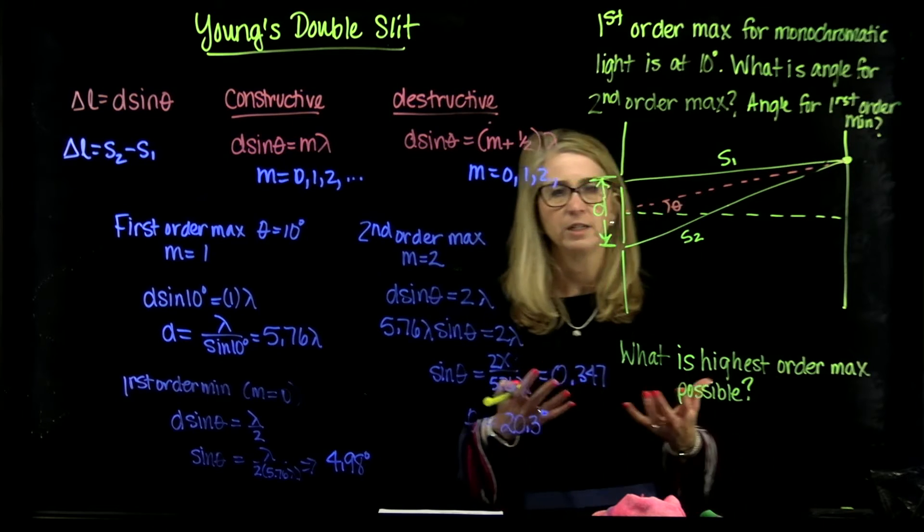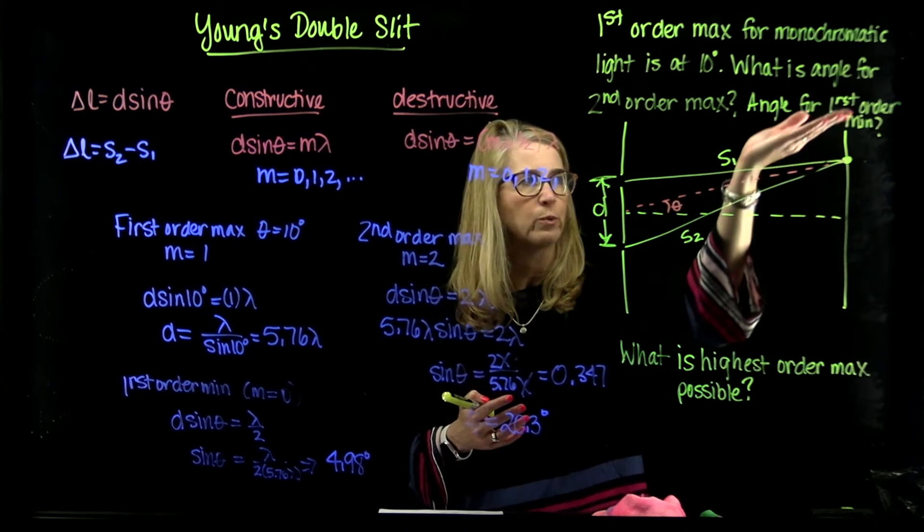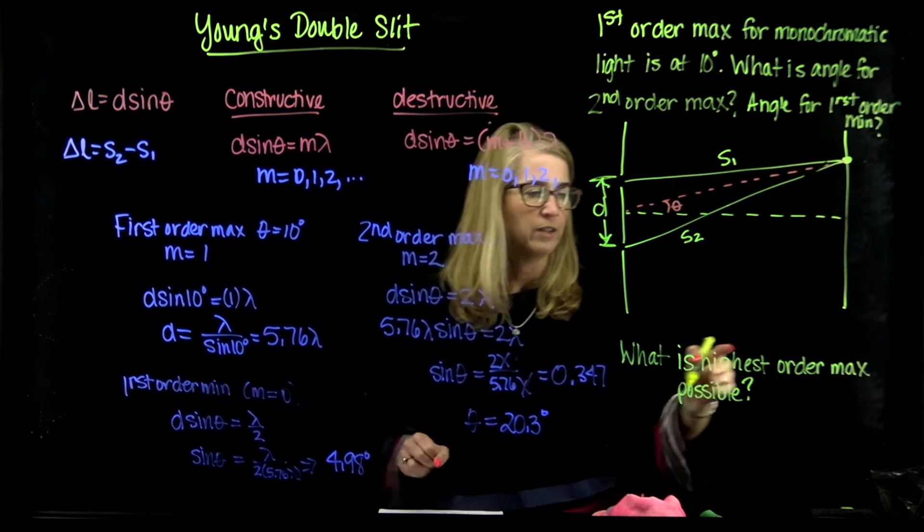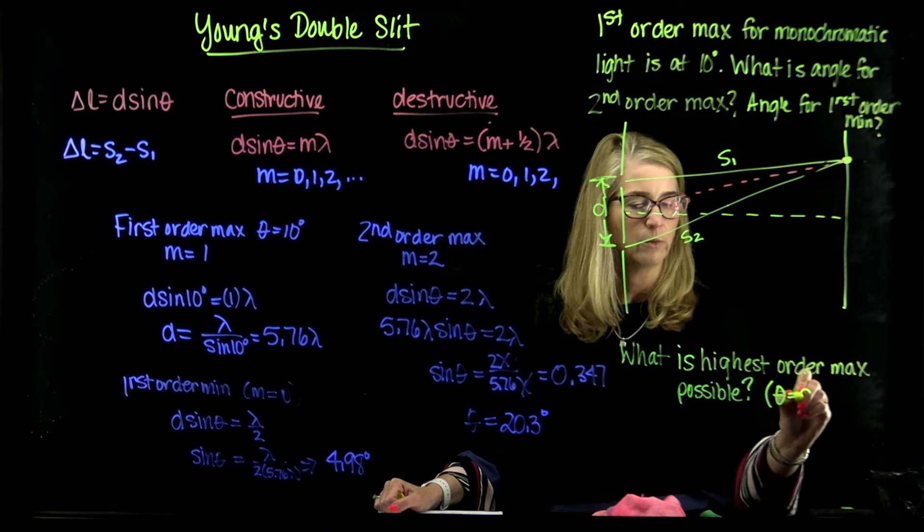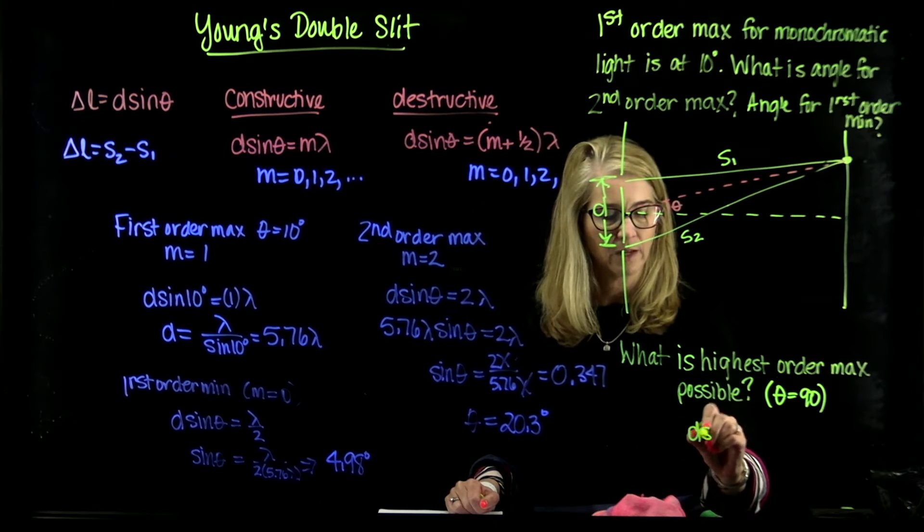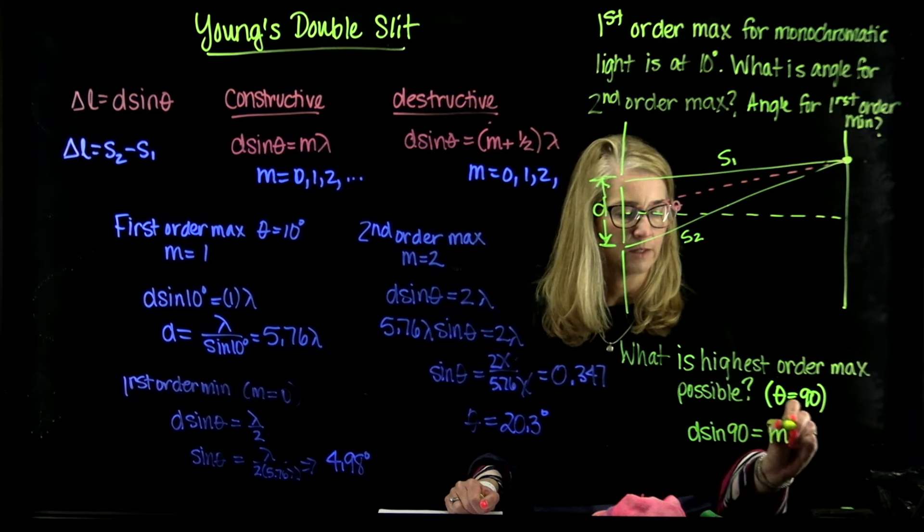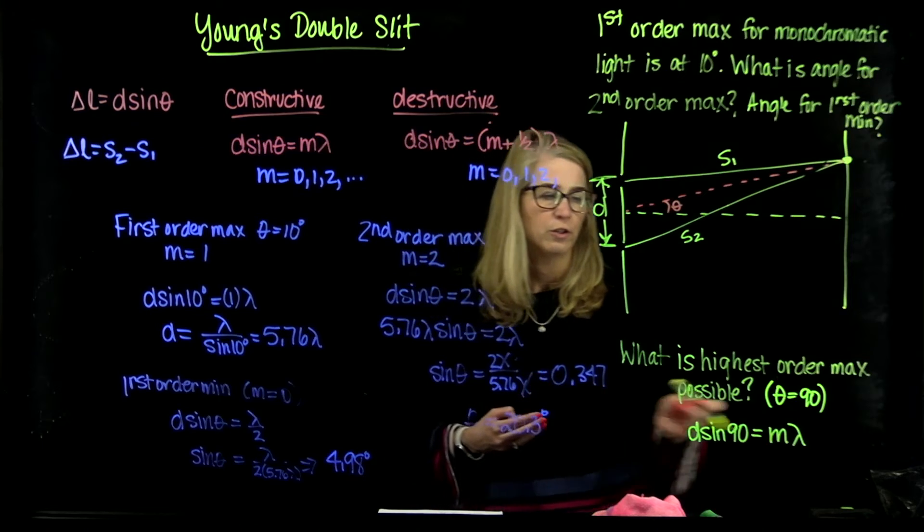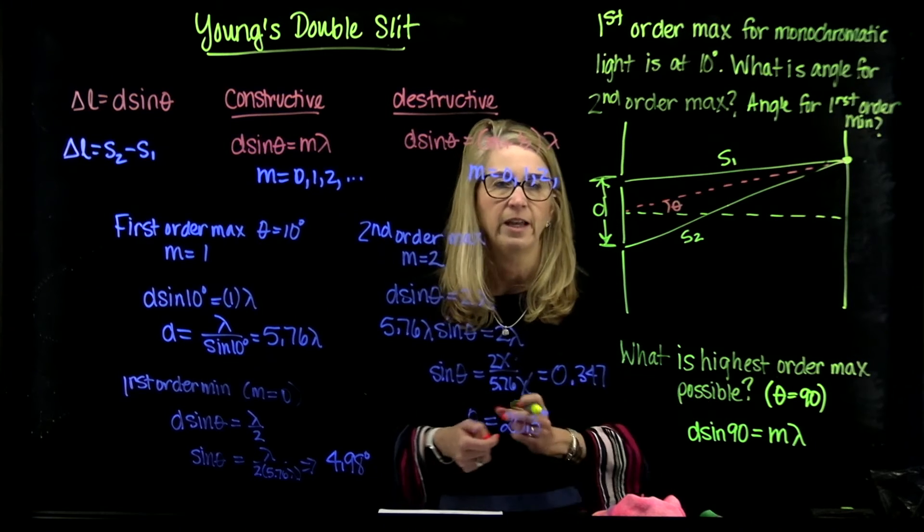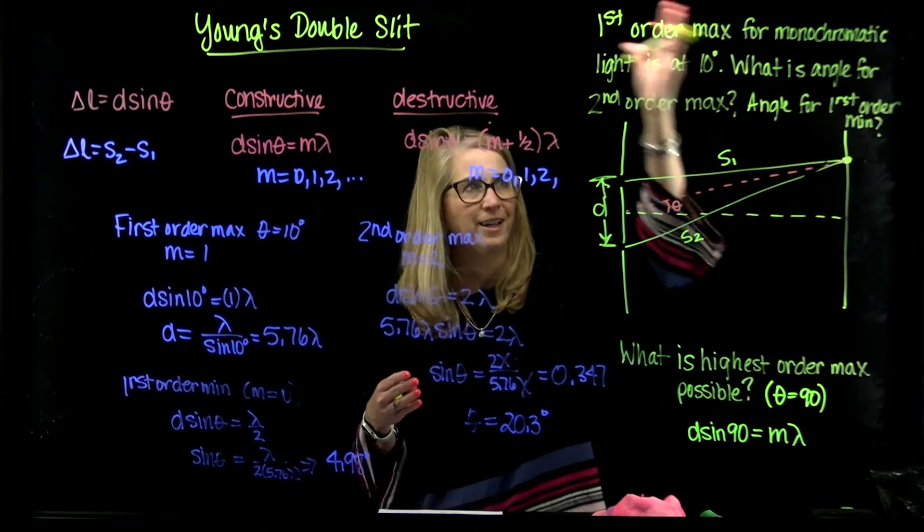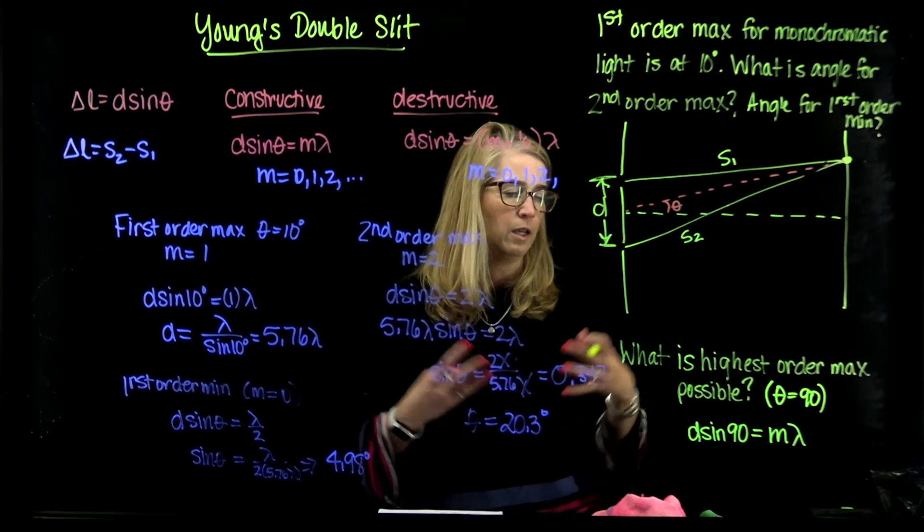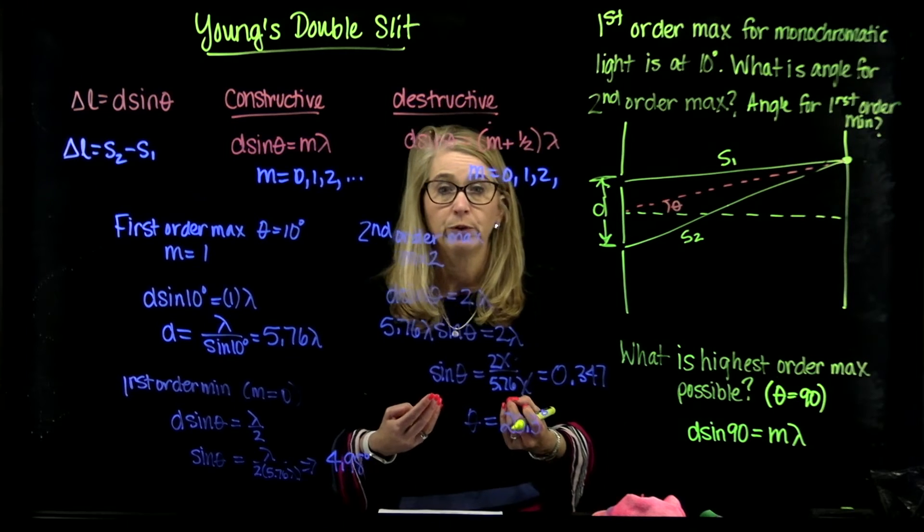So what would be the biggest theta that you could have? Well, you can see as we move away and move up on either side, theta is going to get bigger and bigger. And so to find the highest order maximum possible, we say, well, what if theta was equal to 90? Because that's really the biggest it can be. And so we say D sine of 90 is equal to M times lambda. As the angle gets larger, the order increases. So what we want to figure out here is if I let the angle be 90, which is too big because that's perpendicular to this midline, but it's a good way to find this value, then I can say what would be the M that would make that true. And that will help me find the highest order max that I can have.